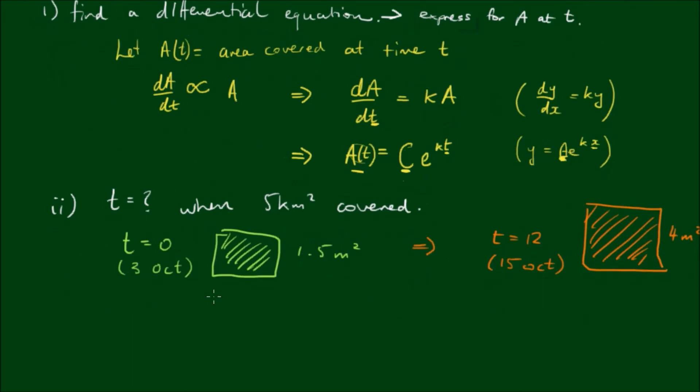So what this allows us to find then is the explicit solution or the unique solution because here we only have a general solution. So at time t, so A of 0, the area is equal to the integration constant times E to the K times 0. So this equals C times E to the 0. E to the 0 is equal to 1 so this just equals C.